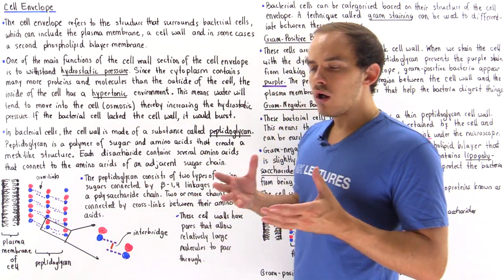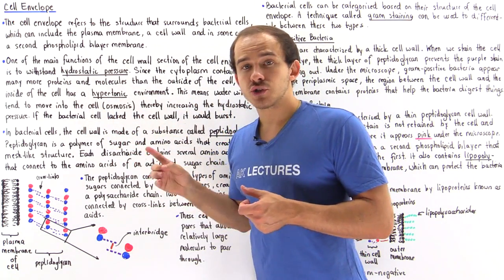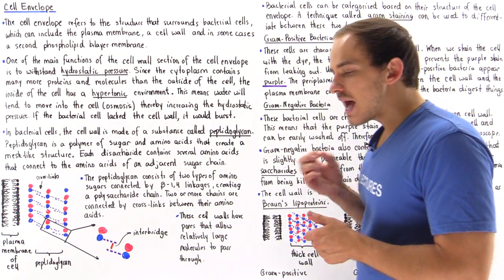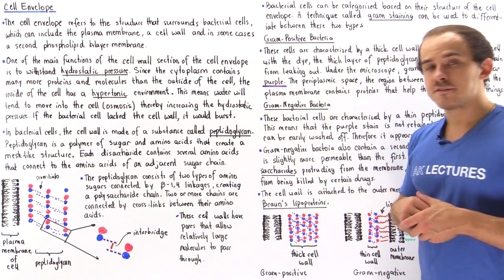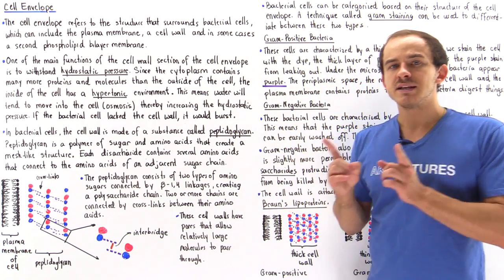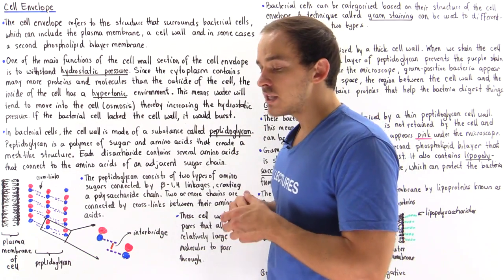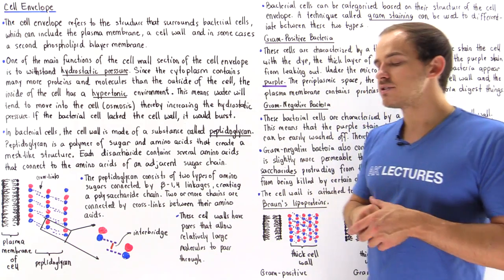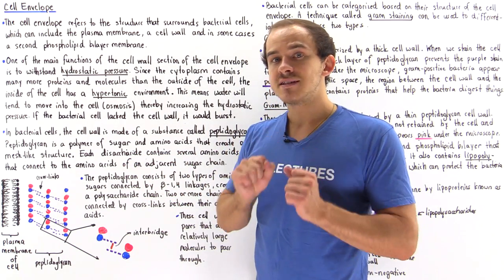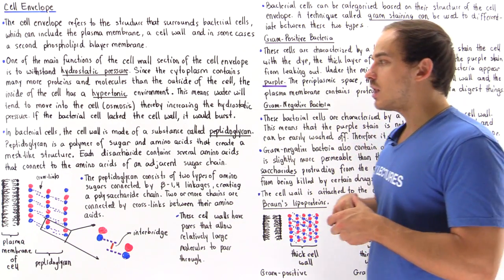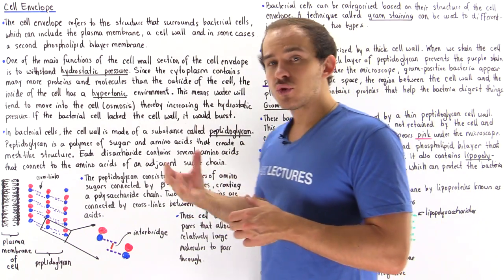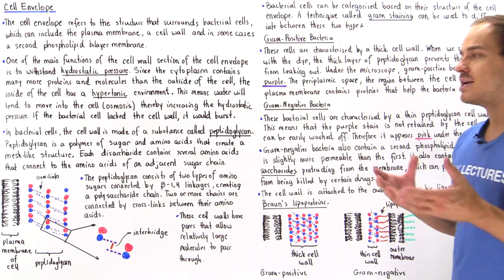The main function of the cell wall is to maintain and resist the hydrostatic pressure that builds up within our cell. Because the cytoplasm of the bacterial cell contains many different proteins, macromolecules, and ions, the bacterial cell is found within a hypertonic environment — meaning there is much more solute inside the cell than outside. As a result, water flows via osmosis from the low-solute environment outside into the high-solute interior of the cell, increasing the hydrostatic pressure inside.